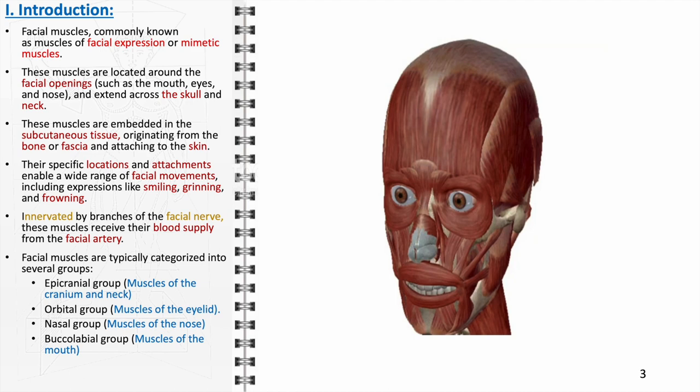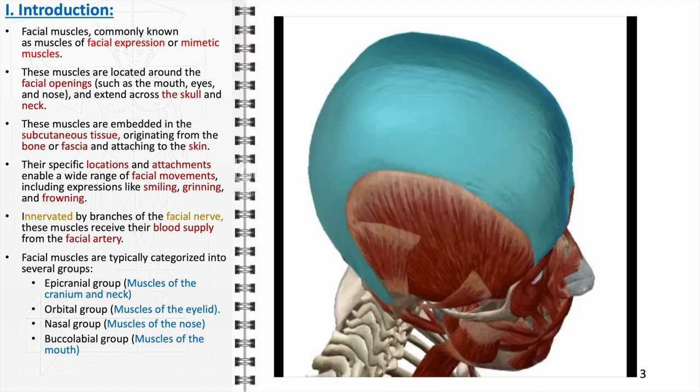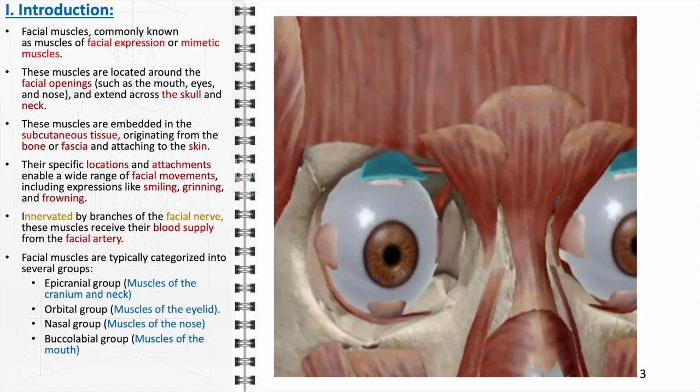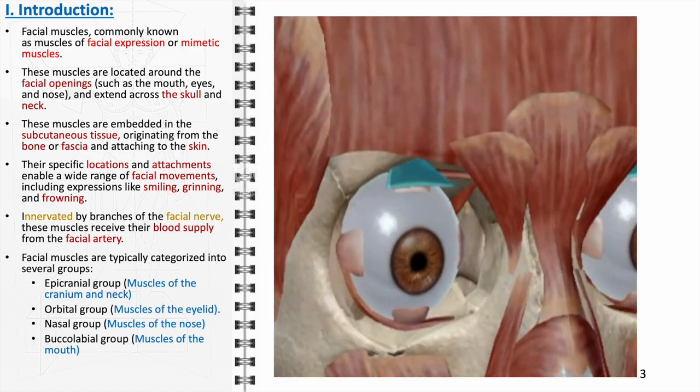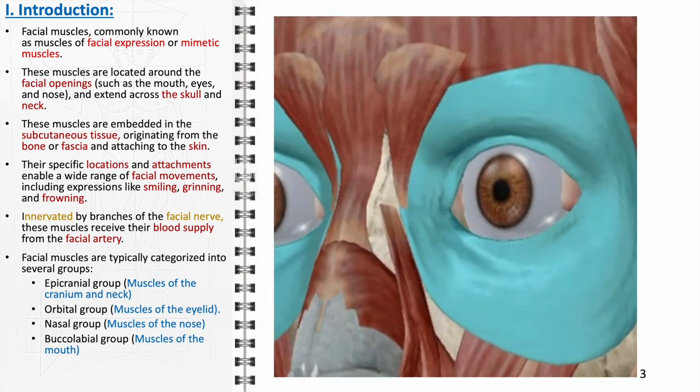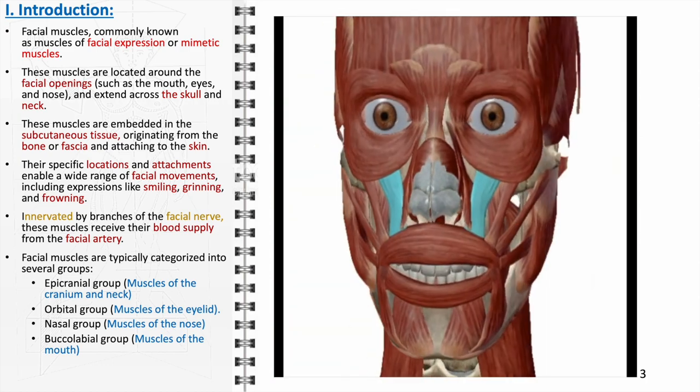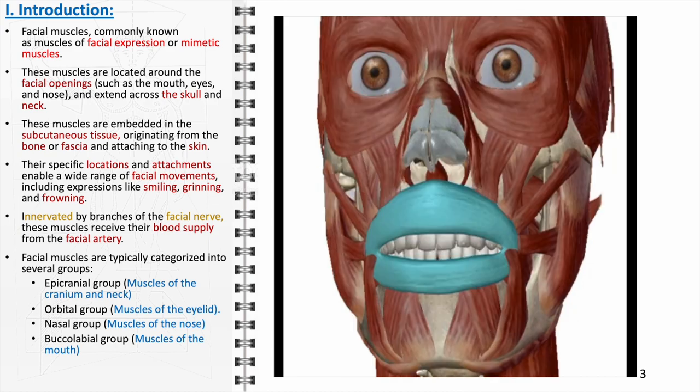For ease of study, facial muscles are typically categorized into several groups based on their location and function: the epicranial group — muscles of the cranium and neck; the orbital group — muscles of the eyelid; the nasal group — muscles of the nose; and the buccolabial group — muscles of the mouth.